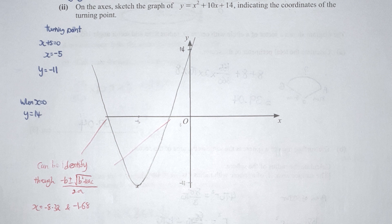Drawing the graph: the turning point is (negative 5, negative 11) and the Y-intercept is 14. For extra accuracy, use the quadratic formula to find both X-intercepts: approximately negative 8.32 and negative 1.68. However, the key assessment is whether you correctly identify the turning point from completing the square. Finding the Y-intercept first is recommended practice.